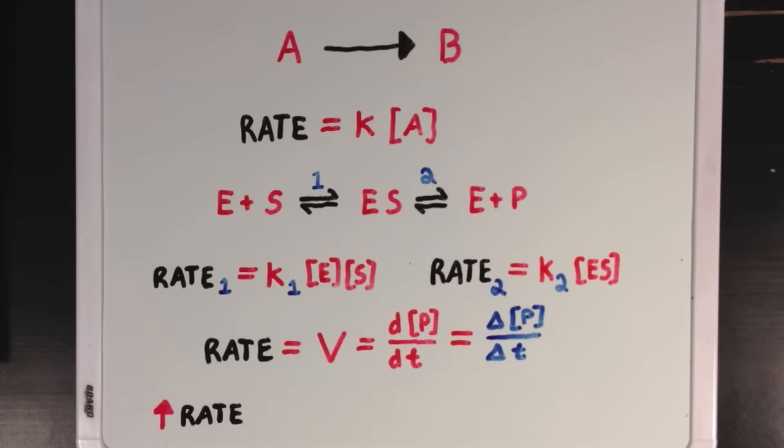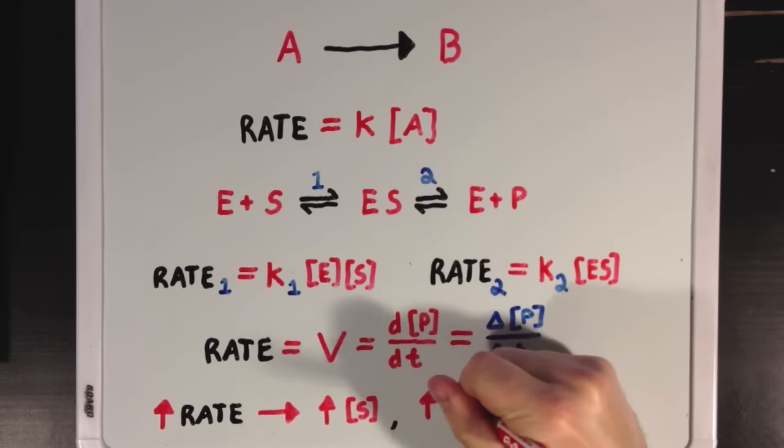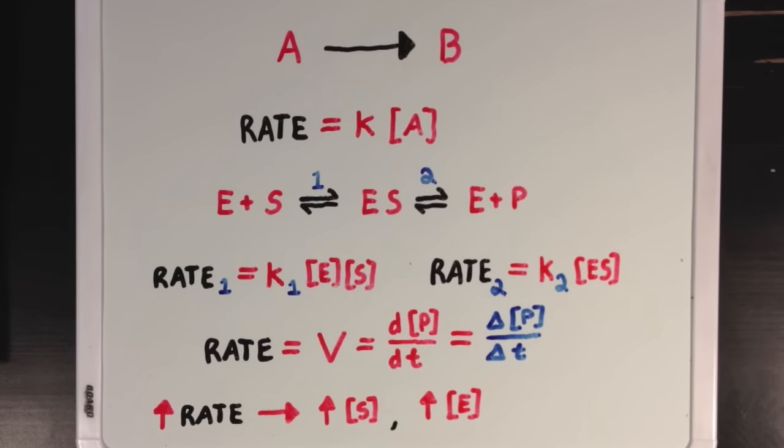So to increase the rate that we get new product, we could do this by either increasing the substrate concentration, or by increasing the enzyme concentration, since we're going to assume that the K value is constant and can't be changed.